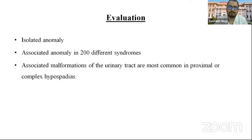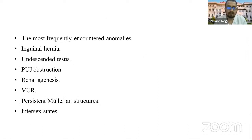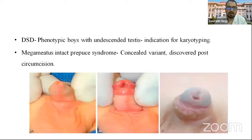In evaluation, hypospadias is commonly an isolated anomaly, but can be associated with 200 different syndromes. Most commonly, proximal and complex hypospadias are associated with urinary tract malformations. The most frequently encountered anomalies include inguinal hernia, undescended testis, PUJ obstruction, renal agenesis, vesicoureteric reflux, persistent Müllerian structures, and intersex states. A phenotypic boy with hypospadias associated with undescended testis is an indication for karyotyping to rule out disorder of sexual differentiation.